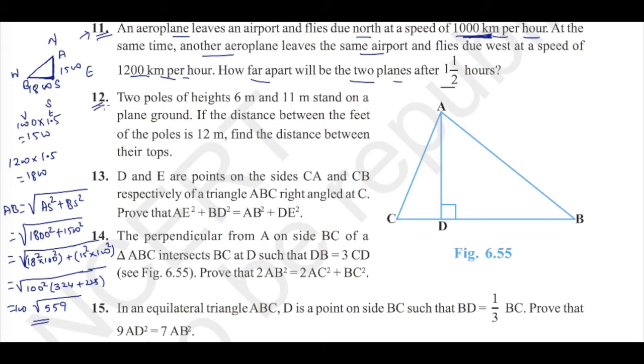Question number 12. Two poles of height 6 meter and 11 meter stand on a plain ground. Let us say this is the plain ground. We have two poles, one is 6 meter and another one is 11 meter. The distance between the feet of the poles is 12 meter. This distance is 12 meter. We need to find the distance between the tops.